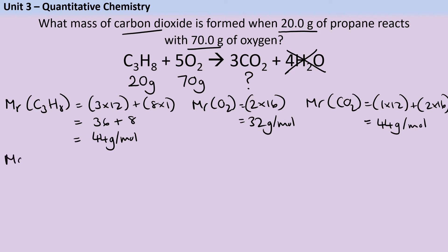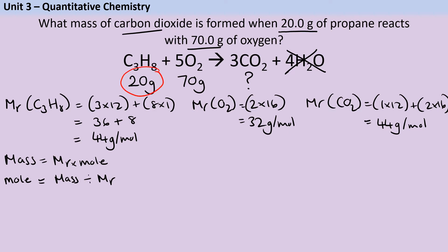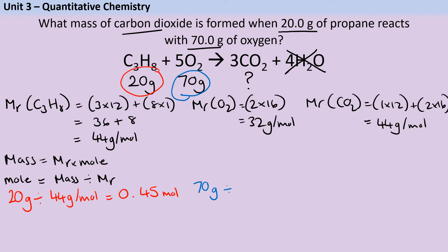Once I've worked out the relative formula masses, I can use the formula: moles = mass ÷ Mr. For propane, that's 20 grams divided by 44 grams per mole, which gives me 0.45 moles. Next, for oxygen, we've got 70 grams divided by 32 grams per mole, which gives me 2.1875. I want to avoid rounding because errors can be introduced that way, so I'll round at the very end of the calculation.